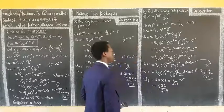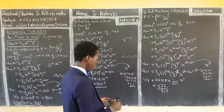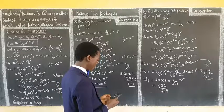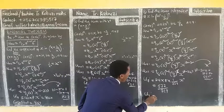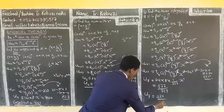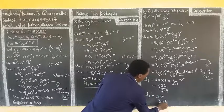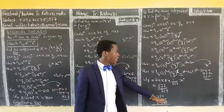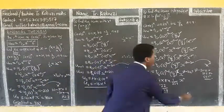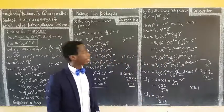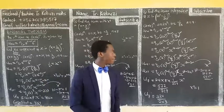Since x^0 = 1, the term is independent of x. Simplifying 672/729, we get the term independent of x. This confirms it has no x, as x^0 = 1 drops out of the expression.